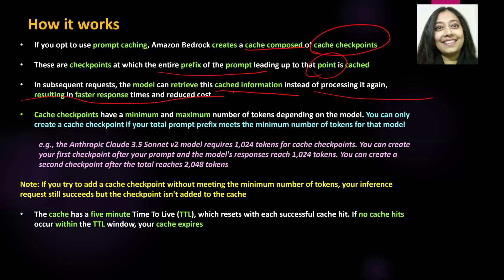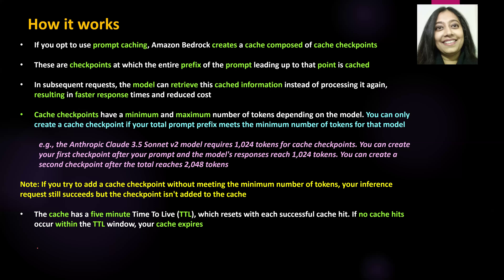Cache checkpoints have certain requirements. There is a minimum and maximum number of tokens required to create a cache checkpoint, and this depends on the particular model. Each model has different requirements for minimum and maximum number of tokens needed to create a cache checkpoint. So you cannot just go ahead and create a cache checkpoint — only if you meet those requirements defined by that particular model can you create one and tell the model to cache your prompt and its inference.